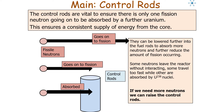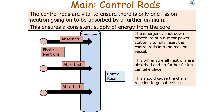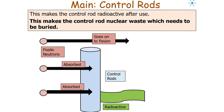If we need more neutrons, we can raise the control rods further. If the fission rate is dropping, we can pull the control rods out of the reactor vessel. The emergency shutdown procedure of a nuclear power station is to fully insert the control rods into the reactor vessel, which ensures all neutrons are absorbed and no further fission can take place, causing the chain reaction to go subcritical. It's important to note that the control rod absorbing neutrons makes the control rod radioactive after use, making it nuclear waste which needs to be buried.